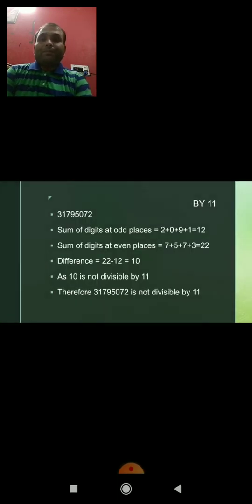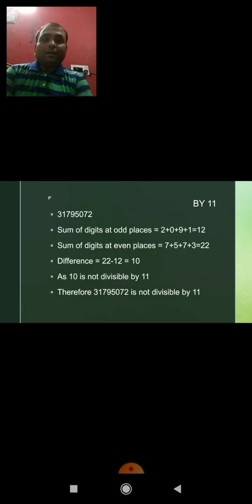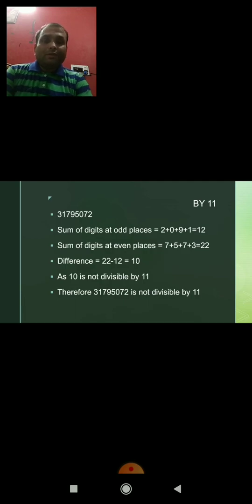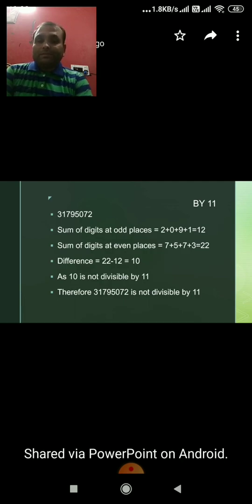Divisibility test of 11 — that's very important. A number is divisible by 11 if the difference between the sum of the digits at even places and odd places is either 0 or divisible by 11. Here, the sum of digits at even places is 12 and at odd places is 22. The difference is 22 minus 12, which is 10. As 10 is not divisible by 11, therefore the number is not divisible by 11. Hope you will revise and learn all the divisibility tests.